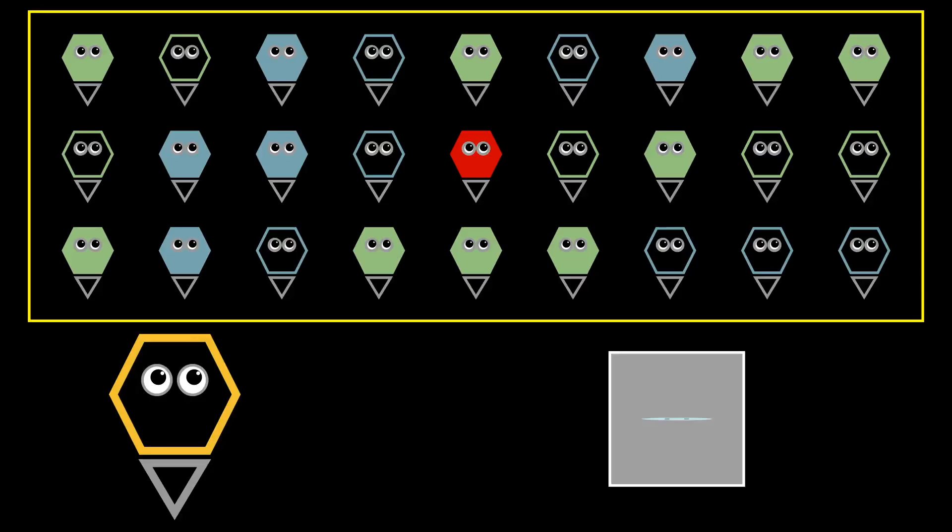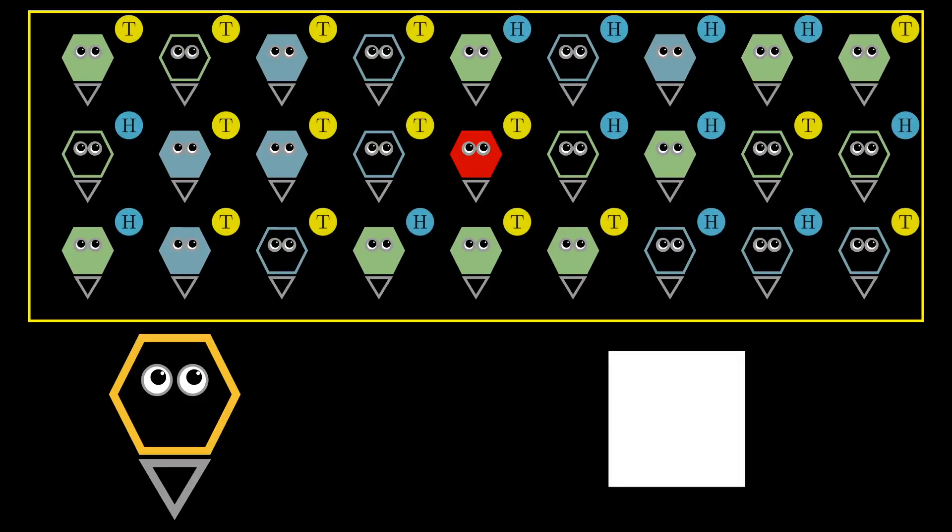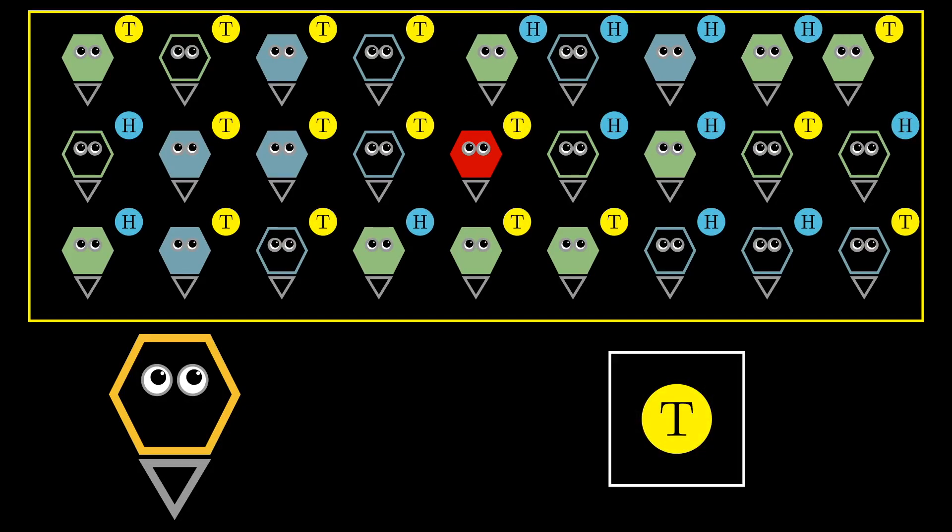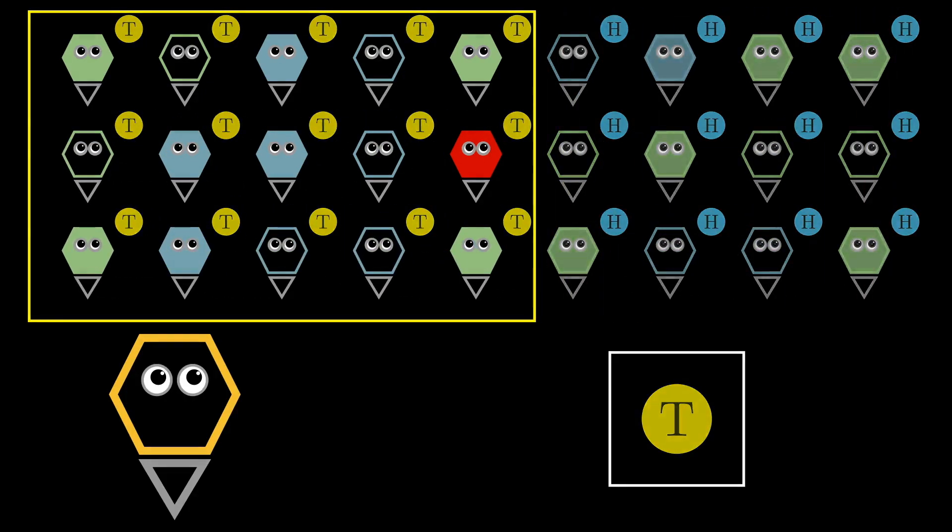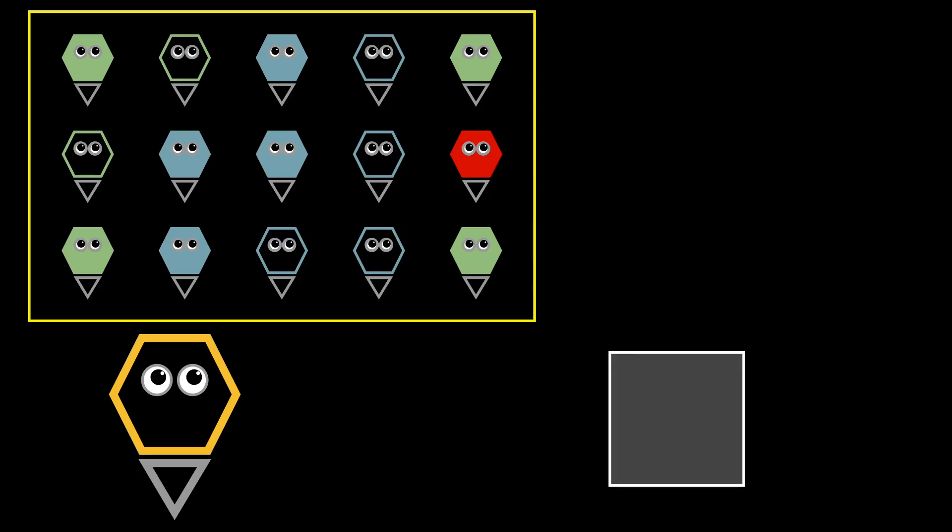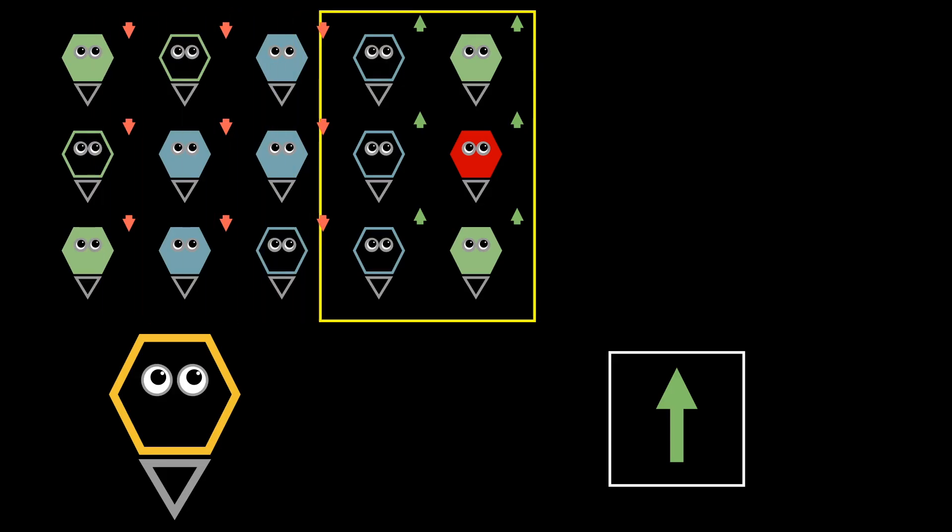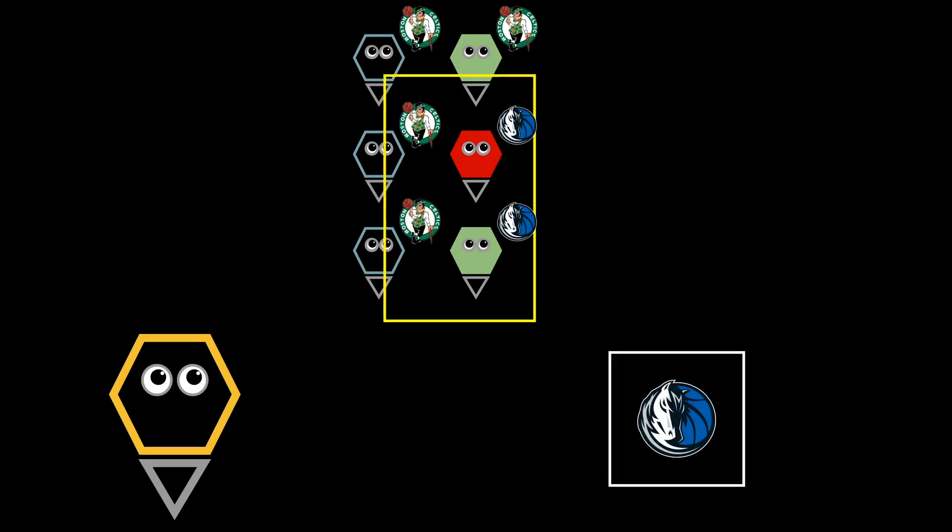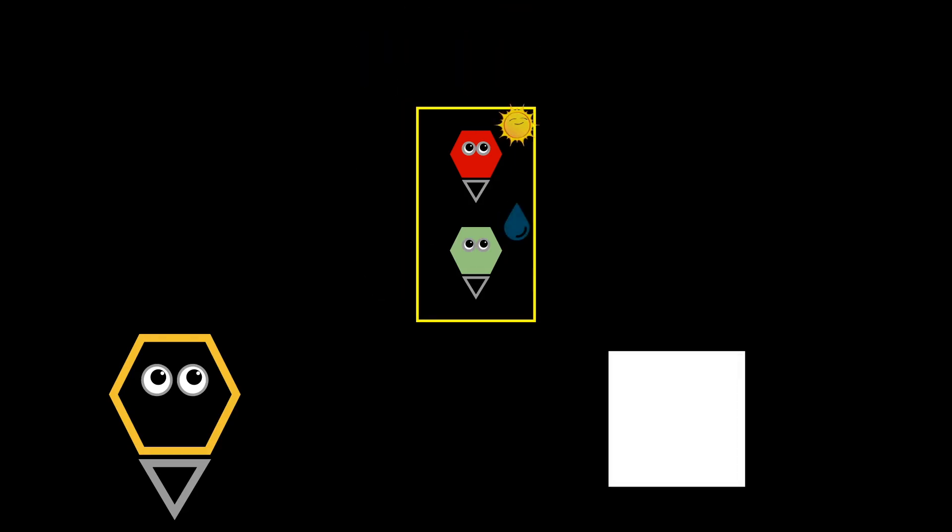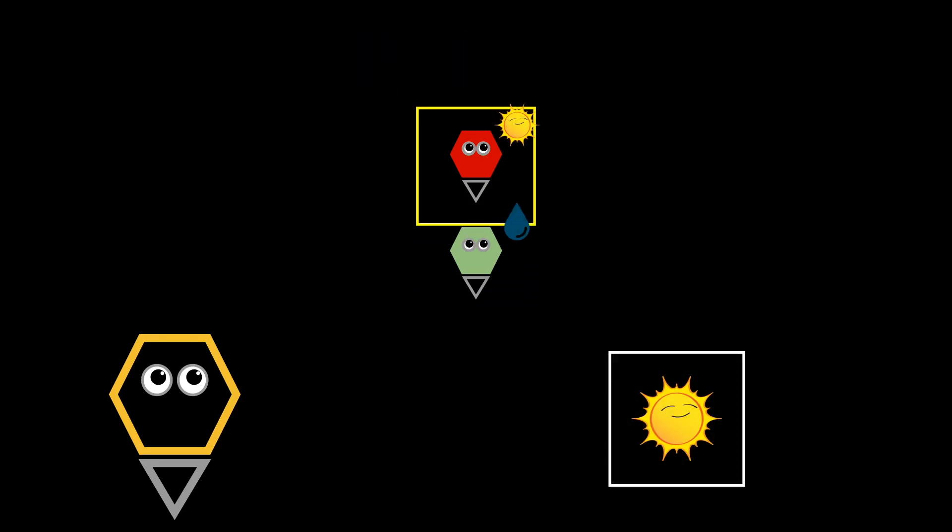Let's take a step back now. Our algorithm did not depend on the setting of predicting coin flips. This means that in any binary decision setting where there are two options, we can follow the algorithm. For example, we could use this strategy to predict if a stock will go up or down, or perhaps to predict the winner of a sequence of basketball games, or maybe even to predict whether or not it will rain every day.